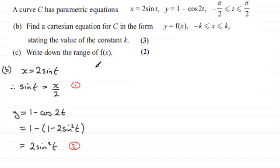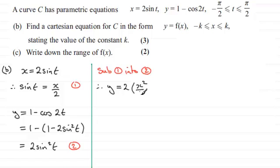So it's just a question now of substituting equation 1 into equation 2. So if we sub equation 1 into equation 2, then what we've got is y equals 2 times sine squared t. Sine t is x over 2, so that's going to be x squared over 4 if I square that. And this reduces down to y equaling a half x squared, or x squared over 2. So there's our Cartesian equation.